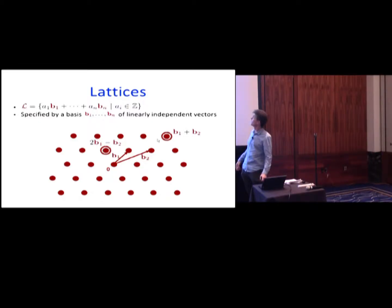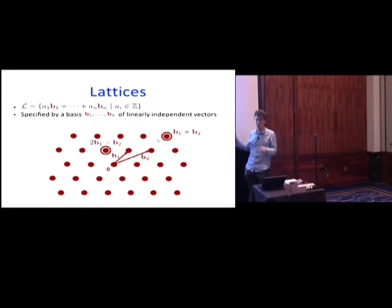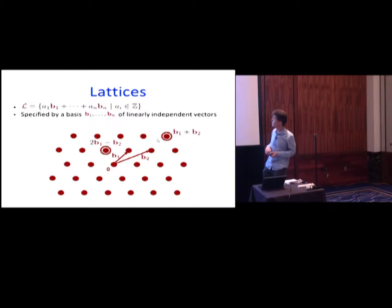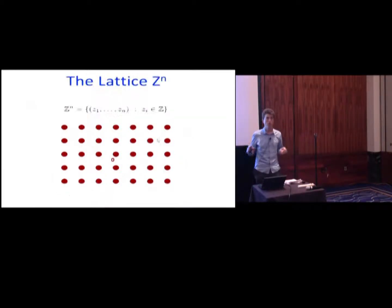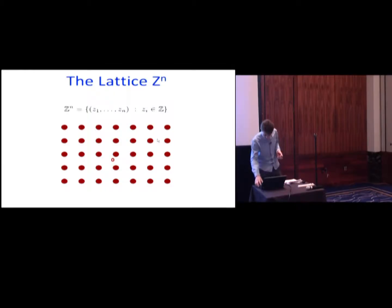So this is a lattice. It's a set of all integer combinations of n linearly independent vectors. If you've ever heard me give a talk, I always start with the definition of a lattice. And the most famous lattice, the celebrity here, is just Zⁿ — the set of all integer points. It's actually going to play an important role in this talk.